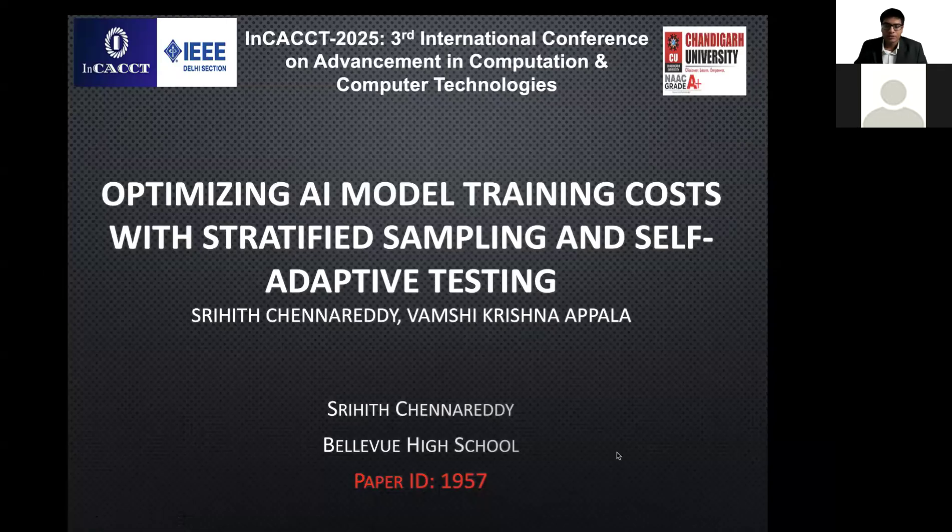Hello everyone, my name is Sriet. My paper ID is 1957 and paper title is Optimizing AI Model Training Cost with Stratified Sampling and Self-Adaptive Testing.